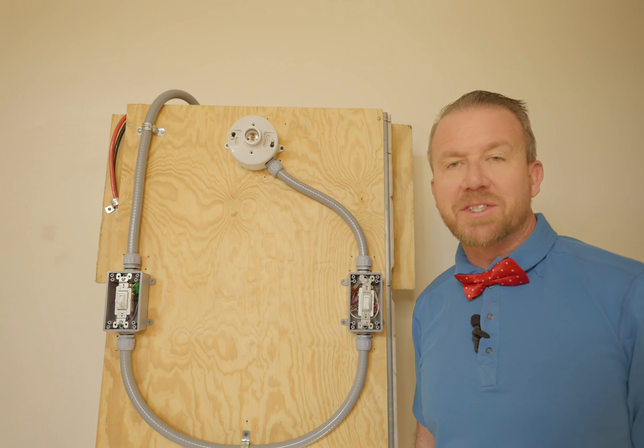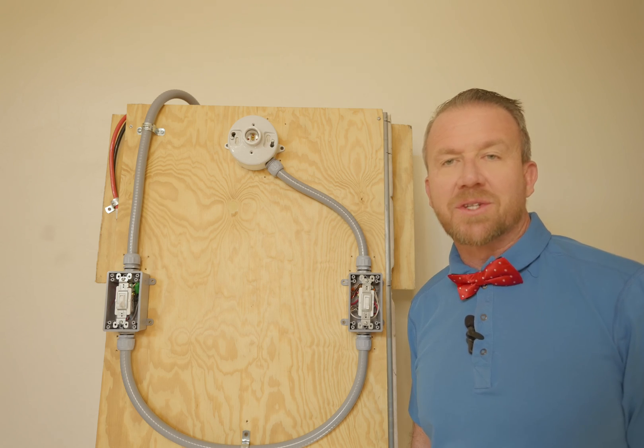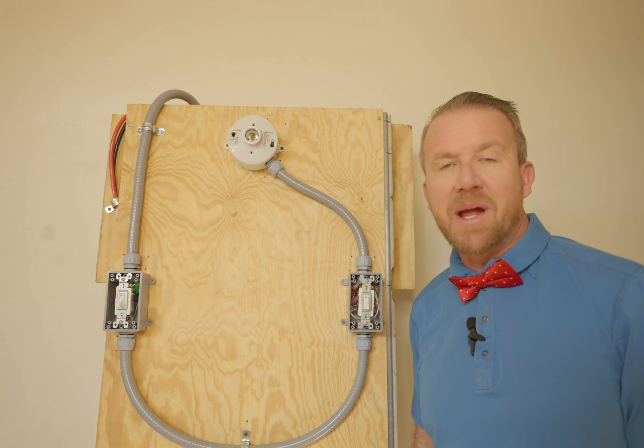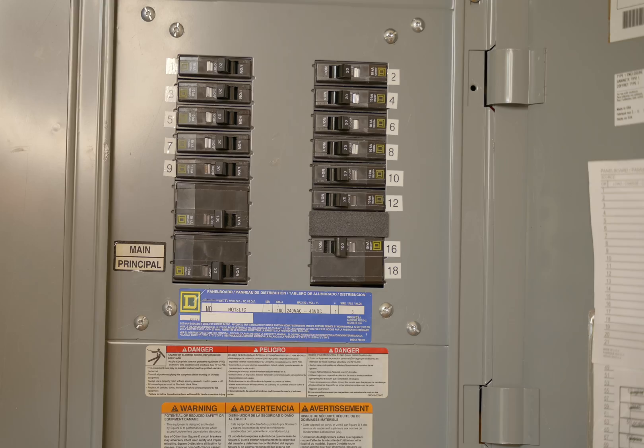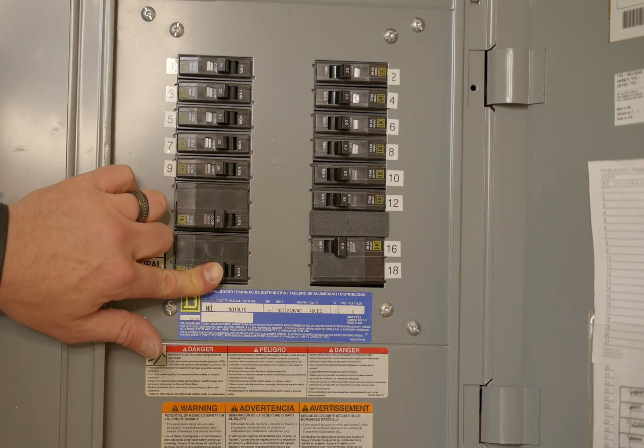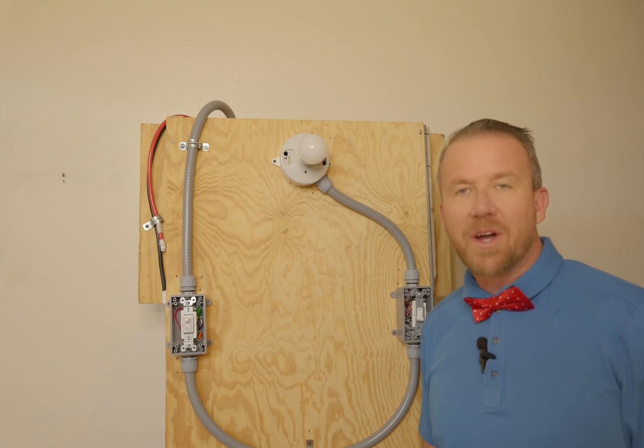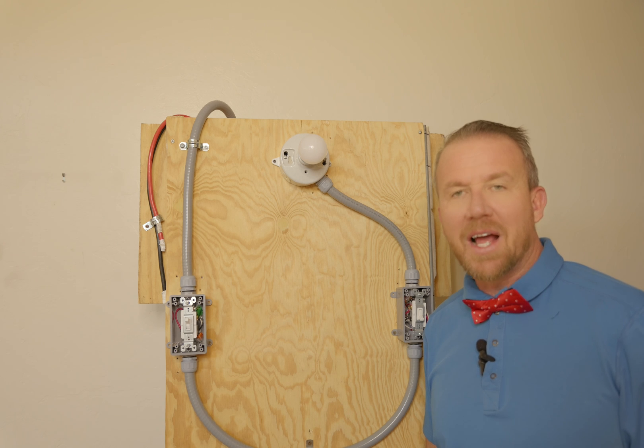Now, of course, before we can test this out, one thing we need to do is turn the circuit breaker to get power back to the circuit. So let's head out to the breaker panel and flip that breaker back on. And now we'll turn on the main breaker. Now that we've got our circuit breaker turned on, the last step is just to see how it works.